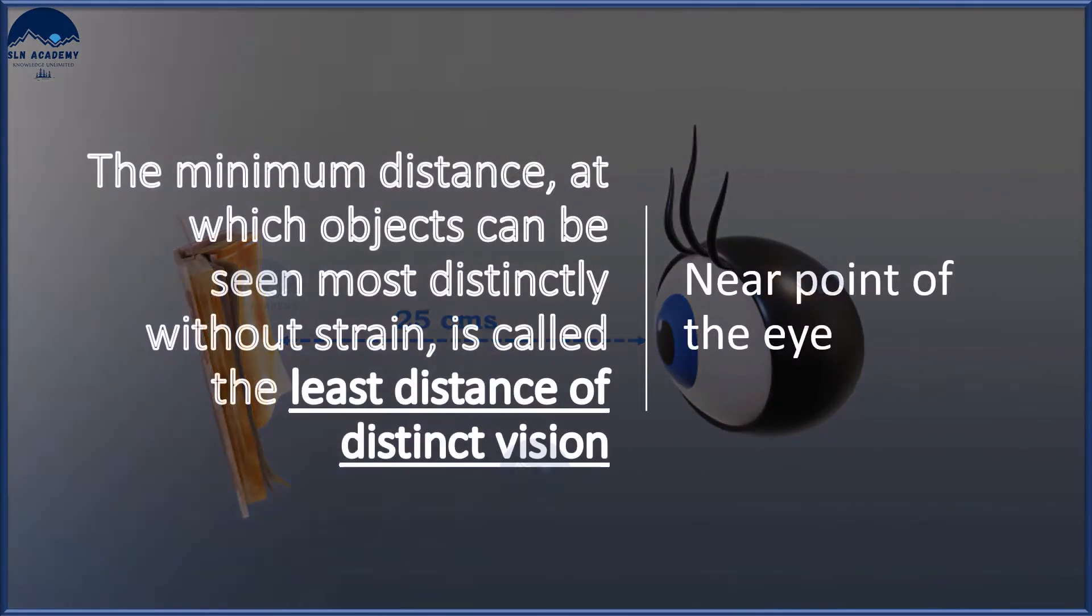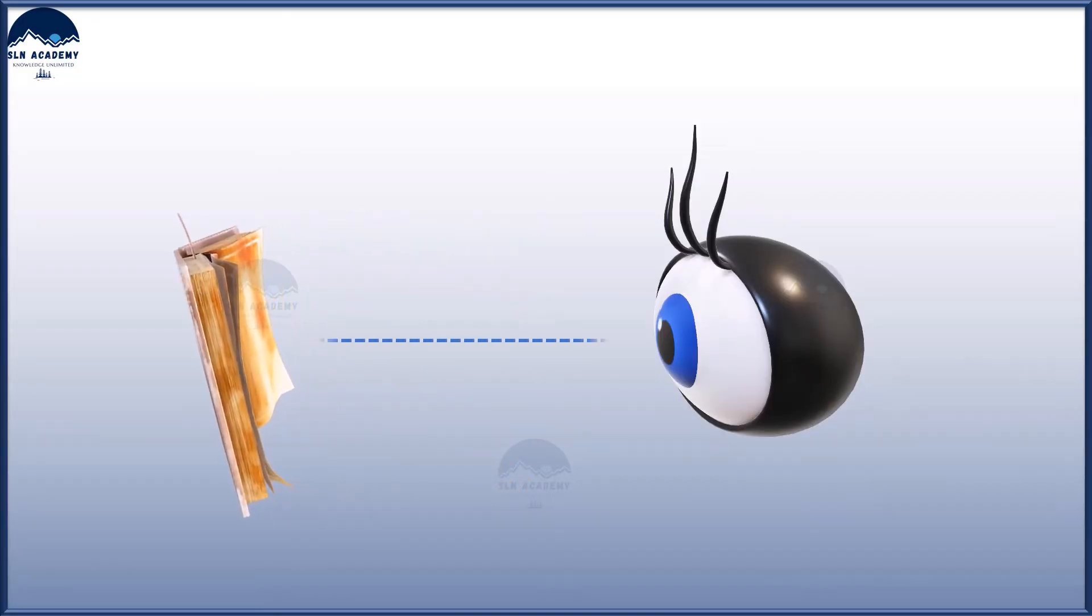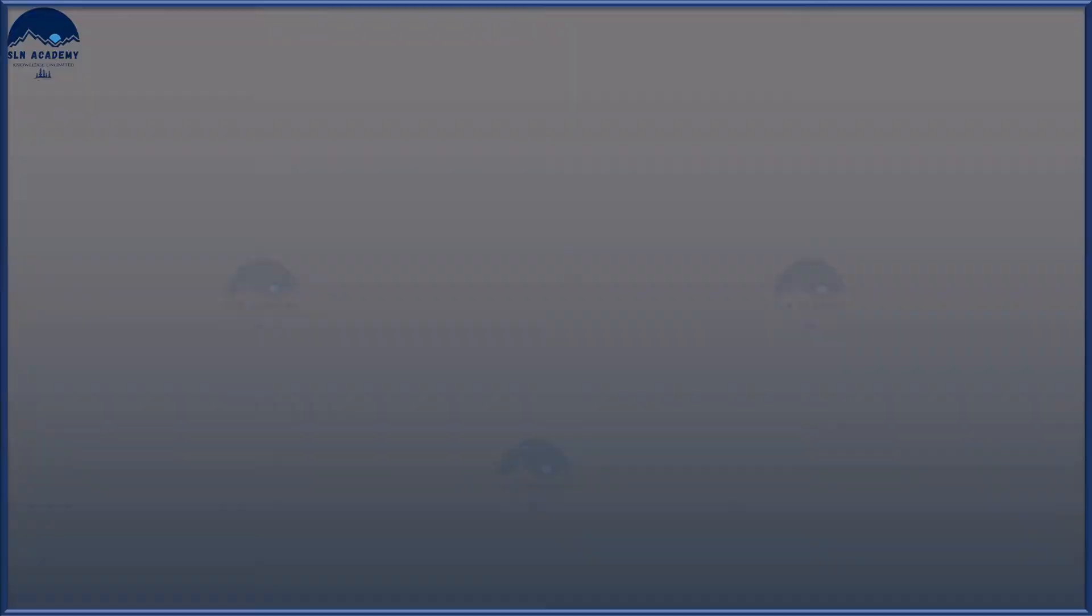The minimum distance at which objects can be seen most distinctly without strain is called the least distance of distinct vision. It is also called the near point of the eye. For a young adult with normal vision, the near point is about 25 centimeters.